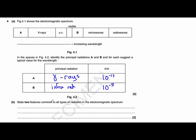And state here, two features common to all types of radiation in the electromagnetic spectrum. Well, they travel at the same speed, which in a vacuum is C, 3 times 10 to the minus 8 metres per second.